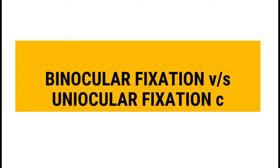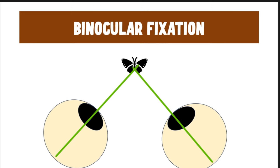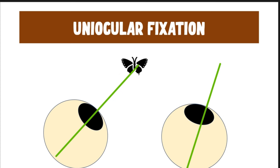Binocular fixation means looking at an object, for example a butterfly, with both eyes together, with the image forming on the fovea of both eyes. Uniocular fixation means only one eye looks at the object and the other eye is looking somewhere else — the image is formed on the fovea of that one eye only.